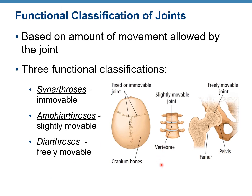An example of synarthrosis — immovable joint — is what connects cranial bones together; we call it a suture. We can see slightly movable amphiarthrosis at the intervertebral joint. And we can see the hip joint as an example of diarthrosis — that's a synovial joint.